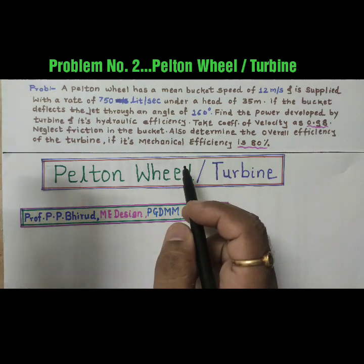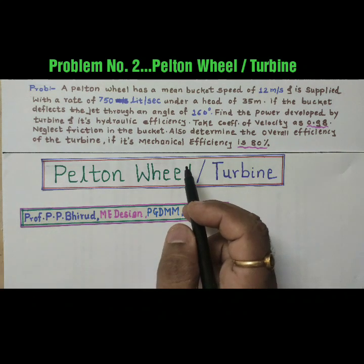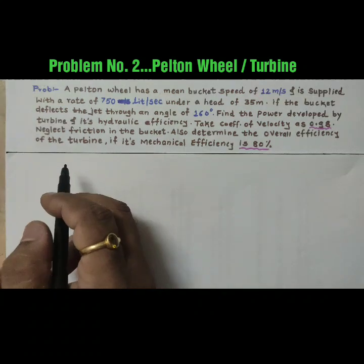Also determine the overall efficiency of the turbine if the mechanical efficiency is 80%. So let us try to solve this example. First we will put the data which is given in the example here.